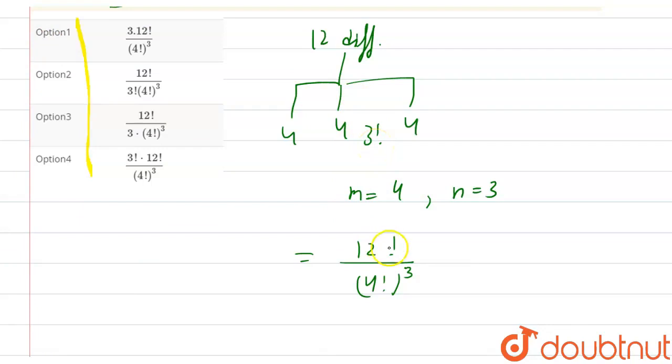So for that, what we will do is we will divide it by three factorial to remove that three factorial arrangement because we don't want that. We want equally in four dividends.